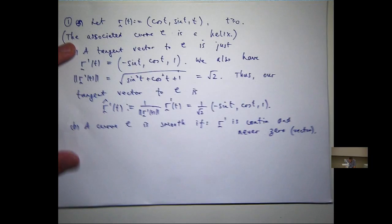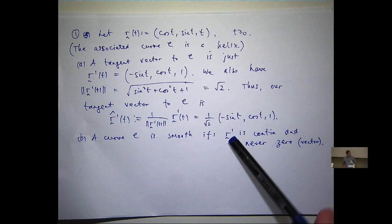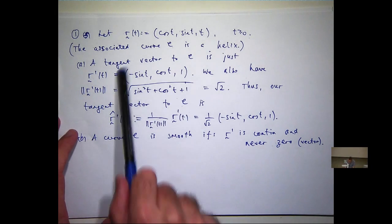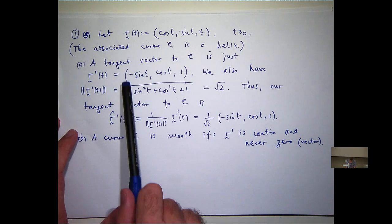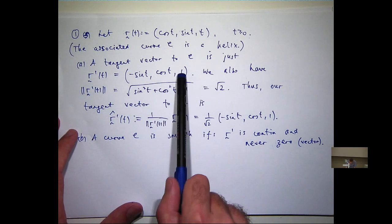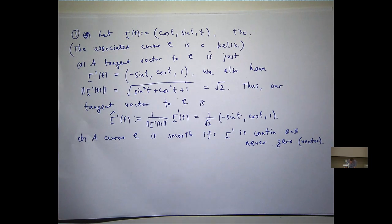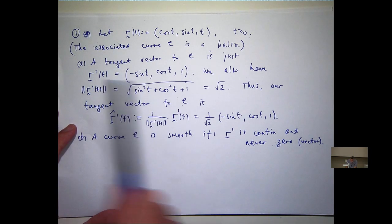When I say never zero, I mean never the zero vector. Well, let's actually have a look at what we've computed in part A. We've already computed R dash in part A. It's here. Is this a continuous vector function? Yeah it is, because sine's continuous, cosine's continuous, and one's just a constant. That's continuous. So yes, because each of the components are continuous, the whole thing's continuous.